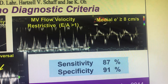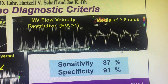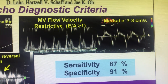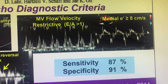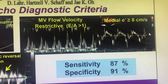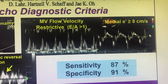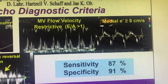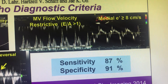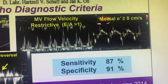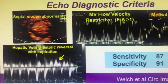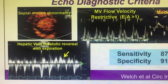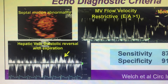Then there is the medial e' (septal e'). The annular e' will be more than 8 cm/s. The lateral e' may be less because of the attachment of the muscle to the pericardium. So a medial e' greater than 8 cm/s, in the presence of a restrictive pattern of velocity in the mitral inflow, is itself confirmatory of constrictive pericarditis.